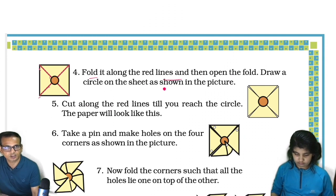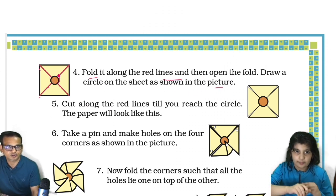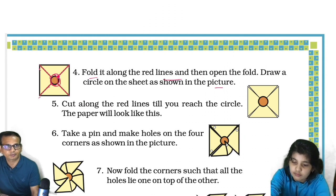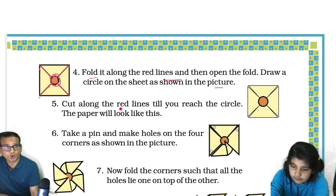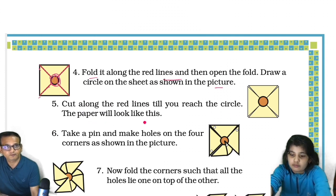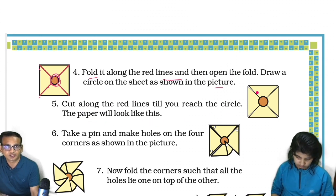Red lines, this is the one. On these corners you have to fold it. Draw a circle on the sheet as shown in the picture - that means you have to draw a circle here in the middle. Cut along the red lines till you reach the circle. The paper will look like this if you cut on this.